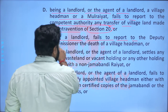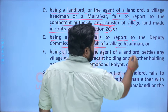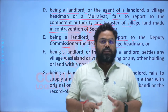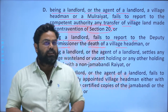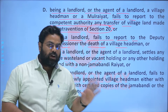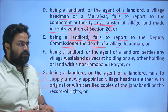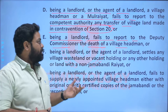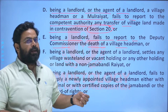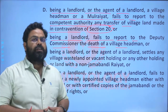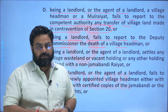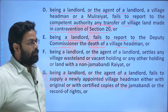Being a landlord, if he fails to report to the DC the death of the village headman, he will be penalized. As we learned in the previous videos, if the village headman dies, the new village headman should be appointed by the DC within three months. The information about the death of the village headman must be provided to the DC by the landlord himself. If the landlord does not inform the DC, he will be penalized.